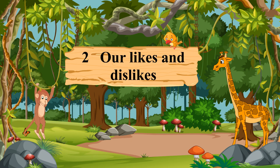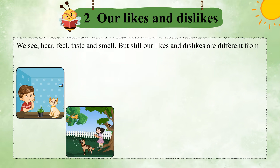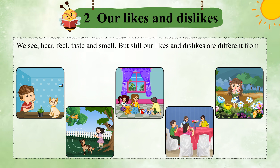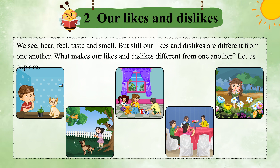Chapter 2: Our Likes and Dislikes. Our five senses help us to discover the world around us and communicate with others. We see, hear, feel, taste and smell. But still, our likes and dislikes are different from one another. What makes our likes and dislikes different from one another? Let us explore.